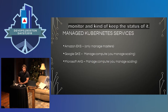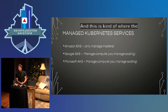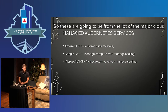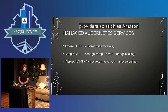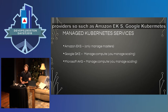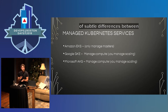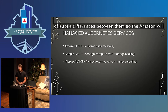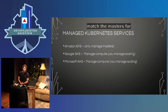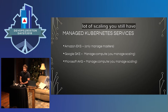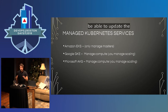This is where managed Kubernetes services come from — from major cloud providers such as Amazon's EKS, Google's Kubernetes Engine, and Microsoft's Kubernetes Service. There are subtle differences between them. Amazon will manage only the masters for you — you'll still manage all worker nodes, the installation, and connecting to the masters, and there's an extra fee. They take away the hardest part but you still have to install software and update the worker nodes.